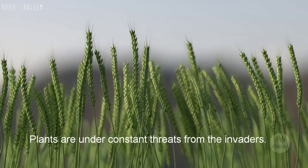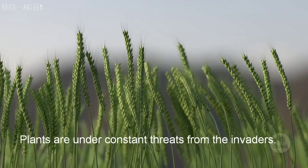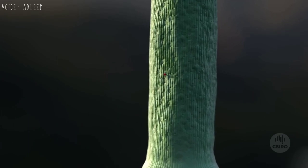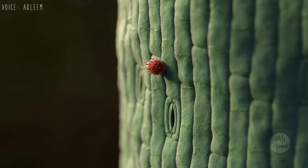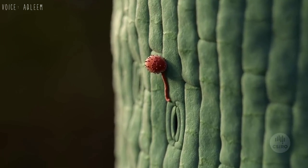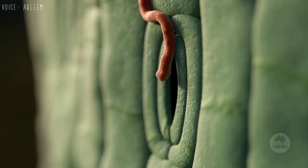Plants are under constant threat from invaders. This wheat crop stem is being attacked by a parasite. The parasite is called rust, although it is actually a type of fungus.